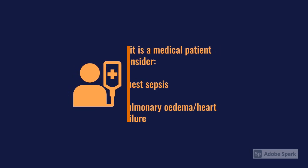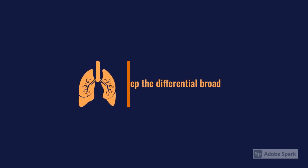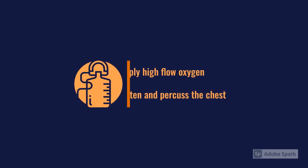It's about keeping that broad differential open for airway and breathing, and treating as you find. We'd want to get oxygen on early for critically unwell patients, listen to their chest, and make sure we're ruling out those diagnoses as we go along. Then when we get to circulation, we need to think about a stepwise approach to how we actually manage that.